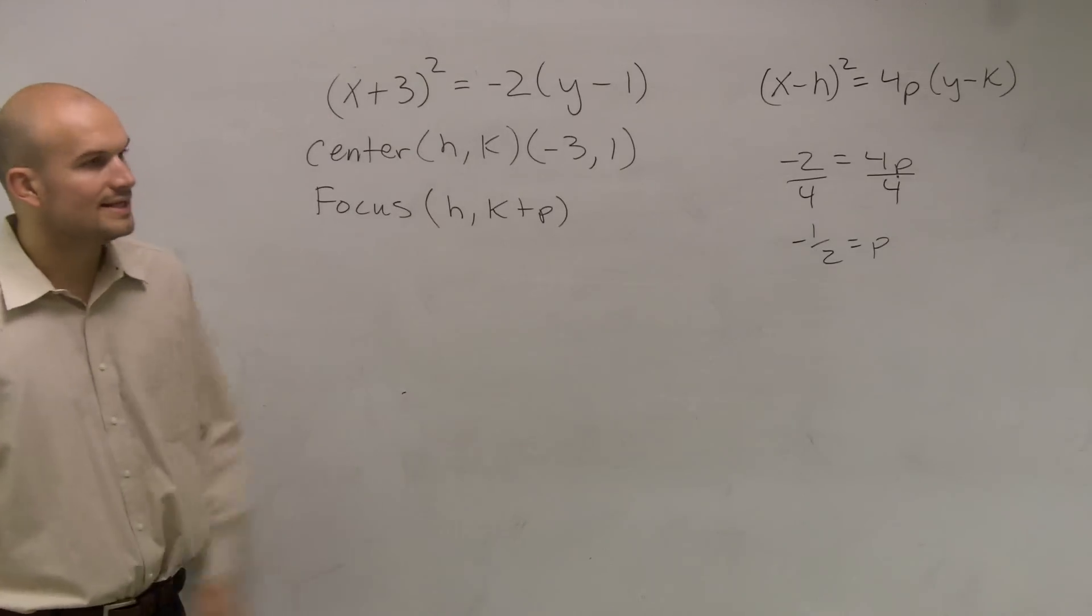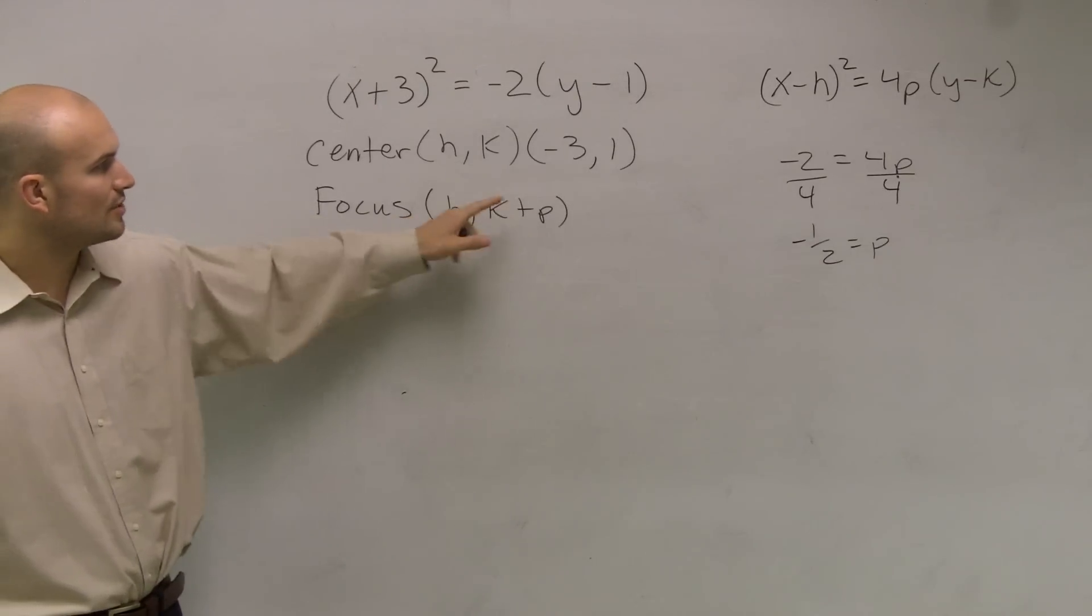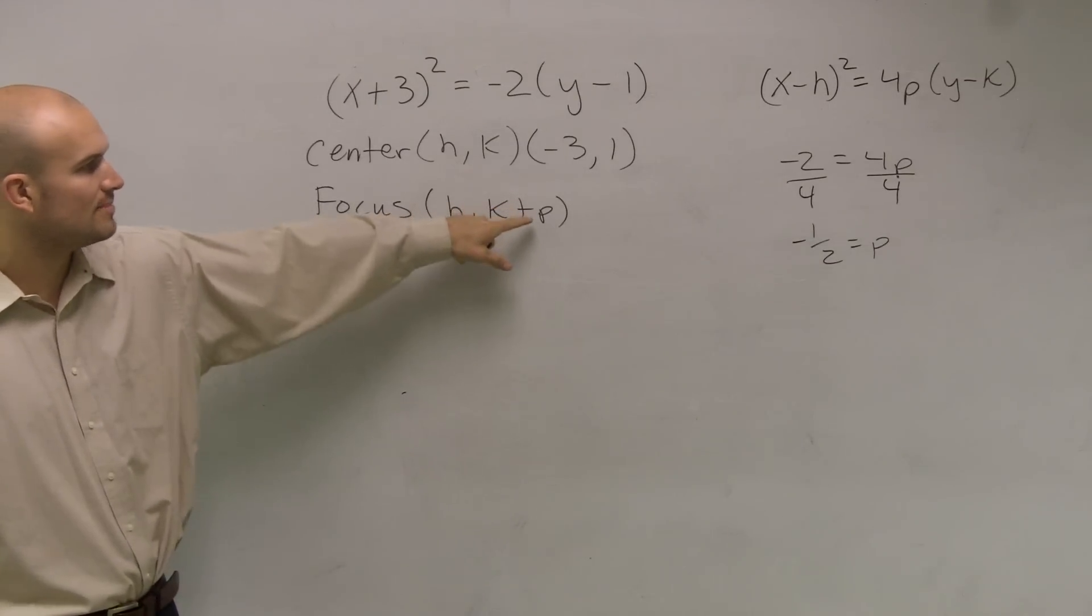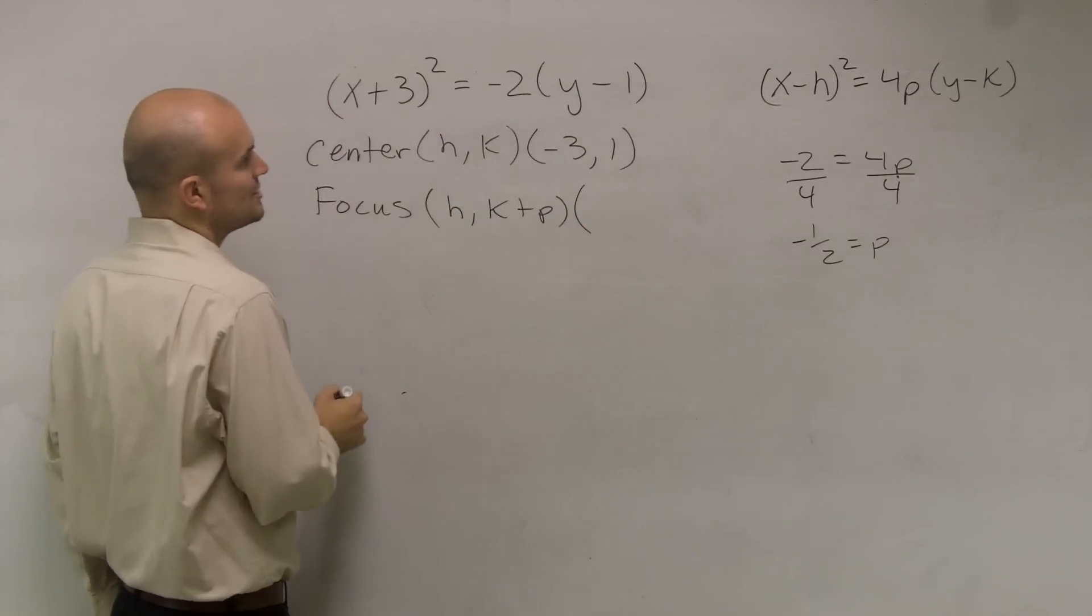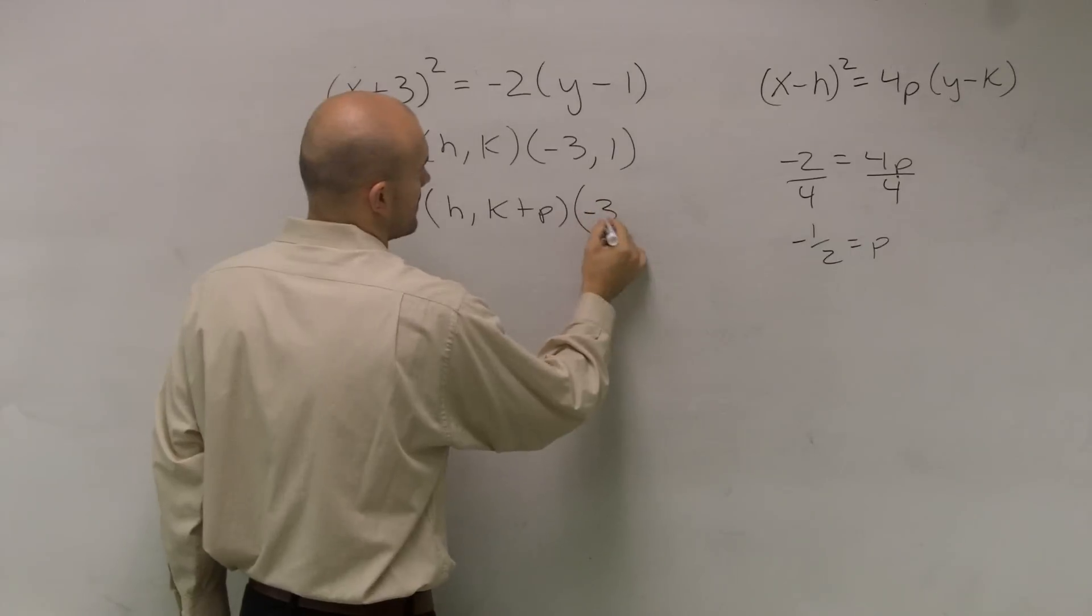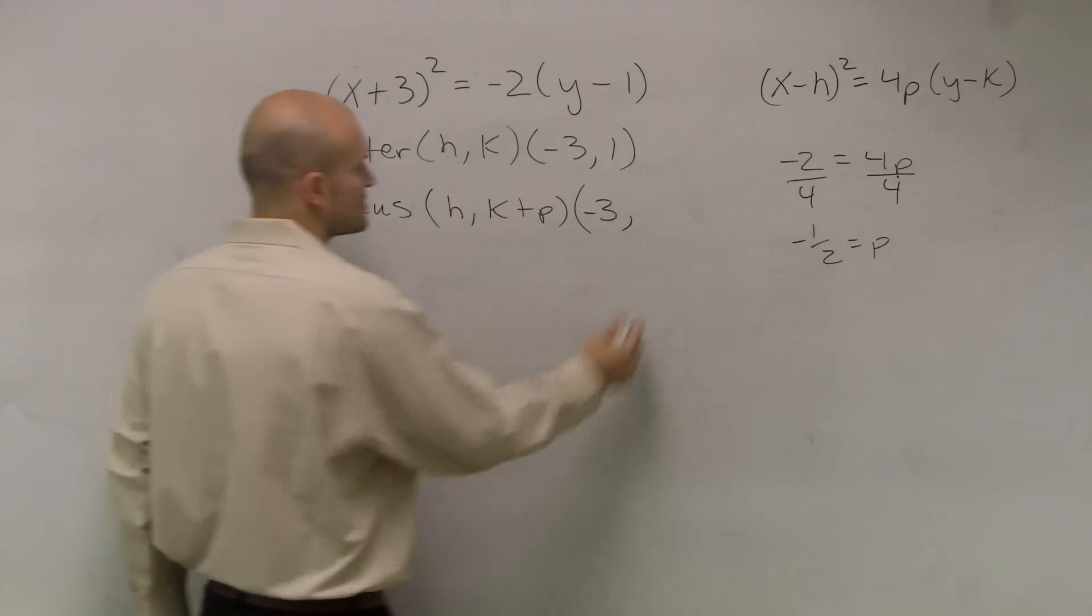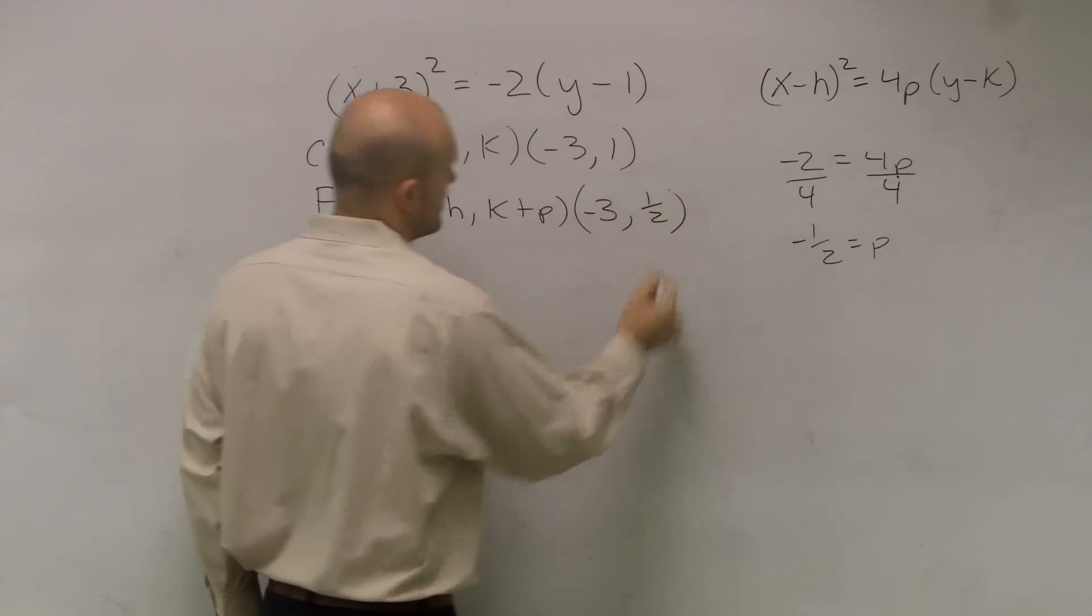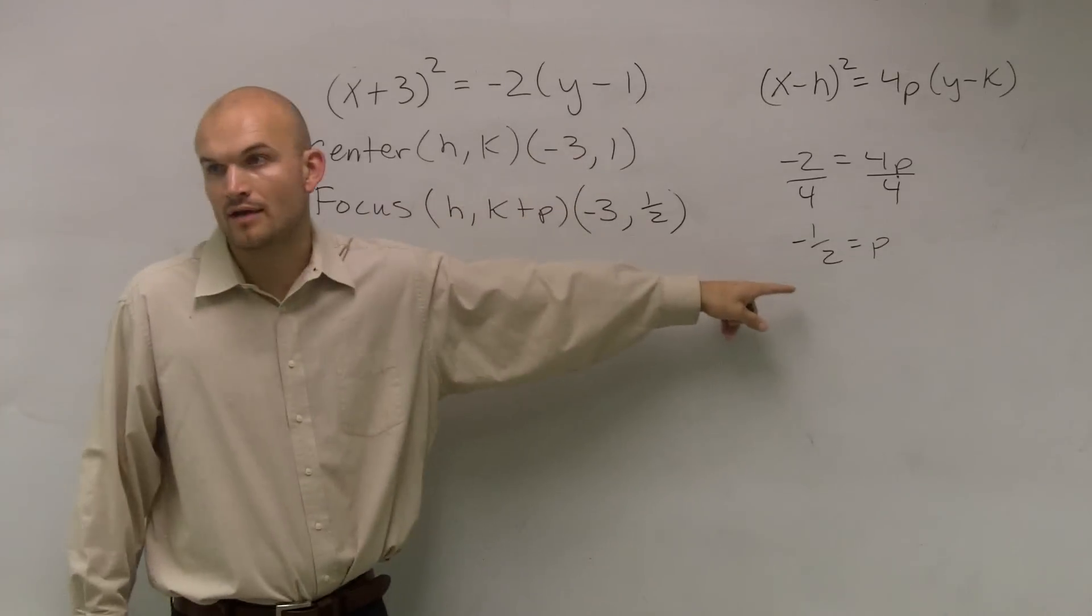So all I need to do to find my focus is I'm just going to plug in what my k value is, or just plug in p and my k. So my focus is going to be h, which is negative 3, and then k, which is 1, plus a negative 1 half, which is 1 half, positive 1 half. I just did 1 plus a negative 1 half.